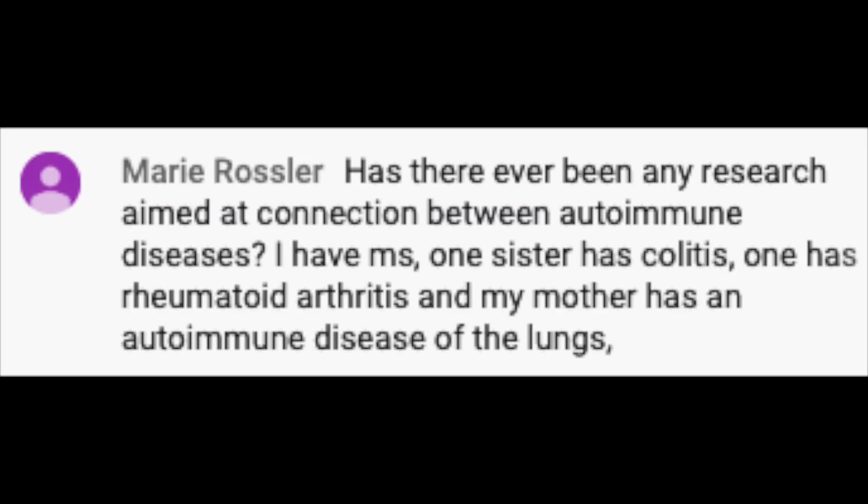Mary Rossler asks: Has there ever been any research aimed at connection between autoimmune diseases? I have MS, one sister with colitis, one has rheumatoid arthritis, and my mother has an autoimmune disease in the lungs. Mary, thank you for the question. The reality is that if you as an individual have one autoimmune condition, you're statistically more likely to have a second autoimmune condition. Moreover, if you have one autoimmune condition, you're much more likely to see autoimmunity in your family, exactly how you describe. It doesn't have to be another family member with MS — it could be some other autoimmune disease. It's very rare in my clinic that I meet someone with MS and, when I take a careful family history, don't learn about a cousin with lupus, an auntie with thyroid issues, a mom with rheumatoid arthritis, or a brother with diabetes. There's a very robust literature, and your family's example is spot on.